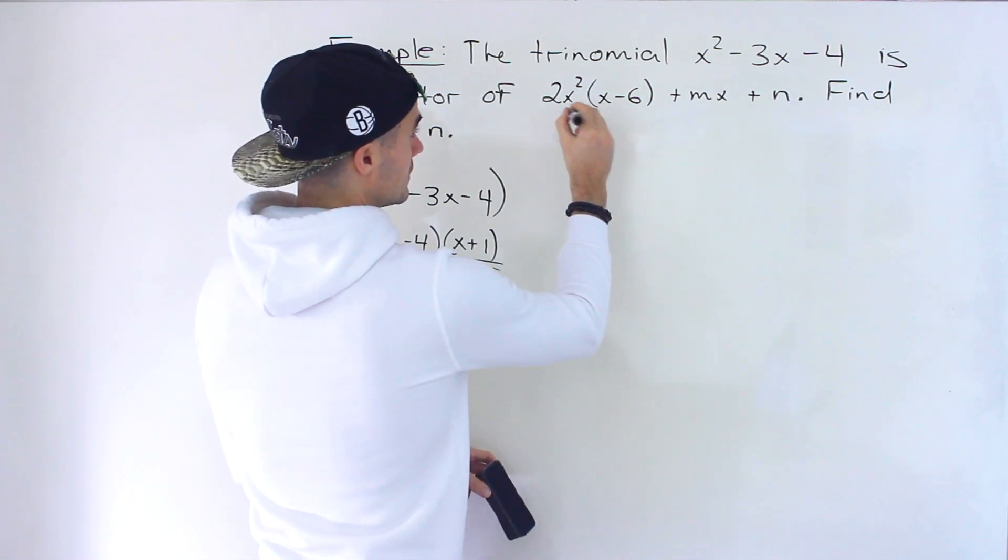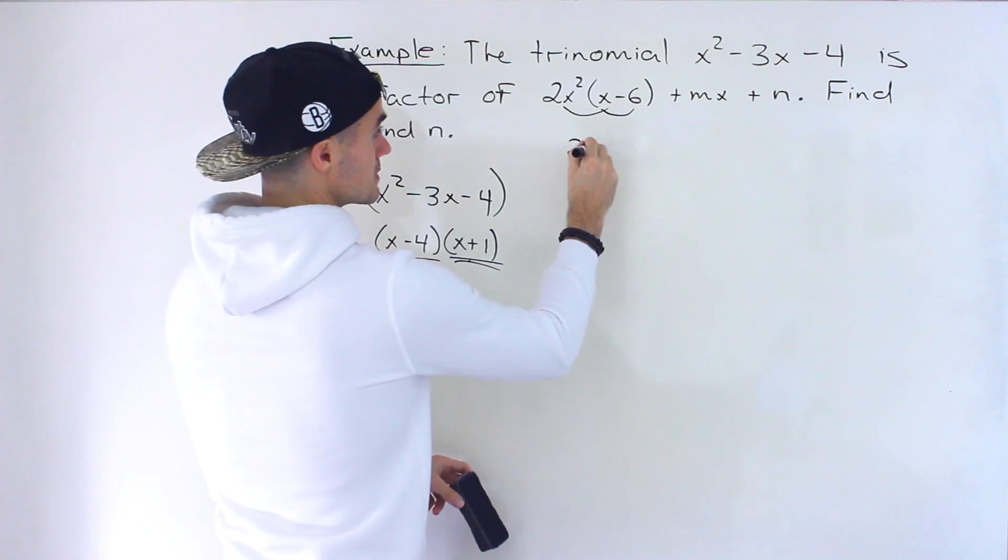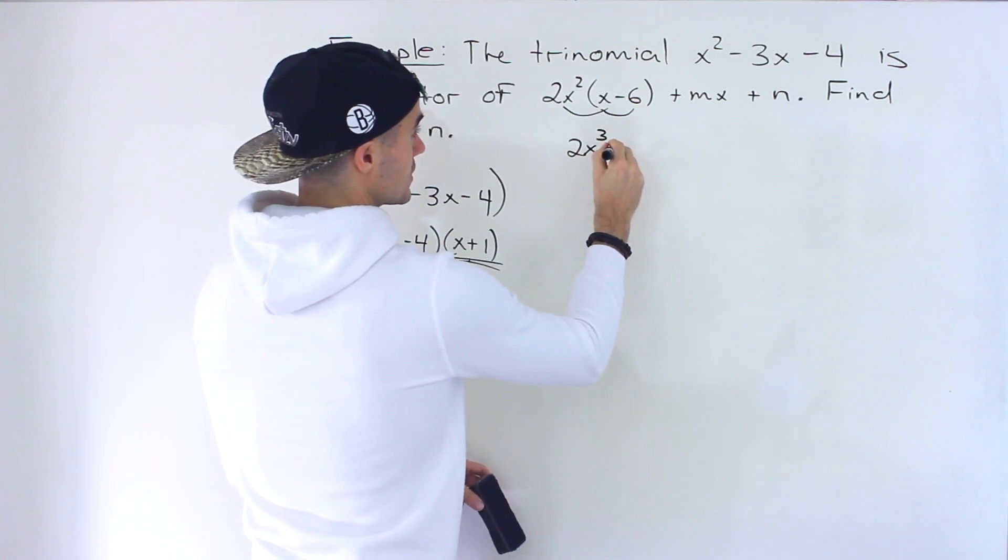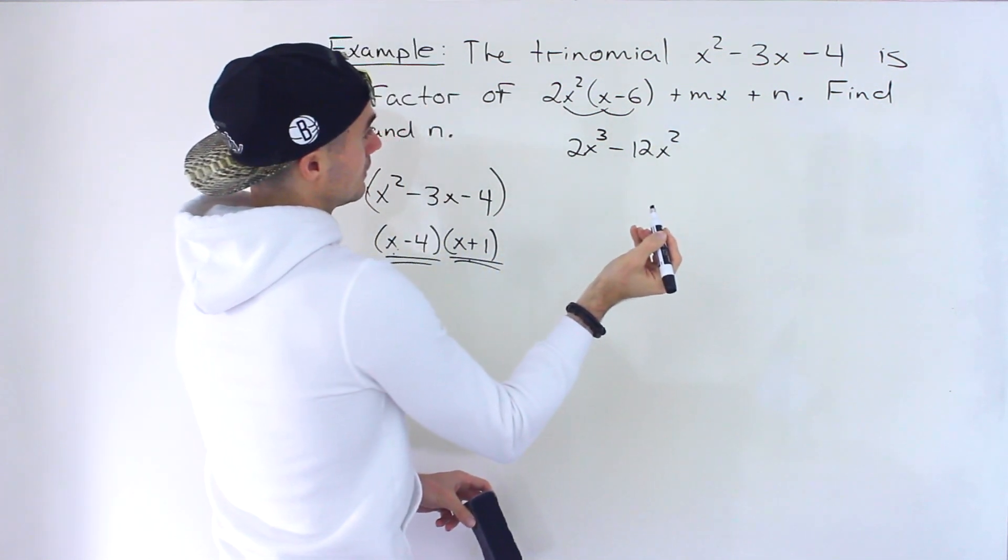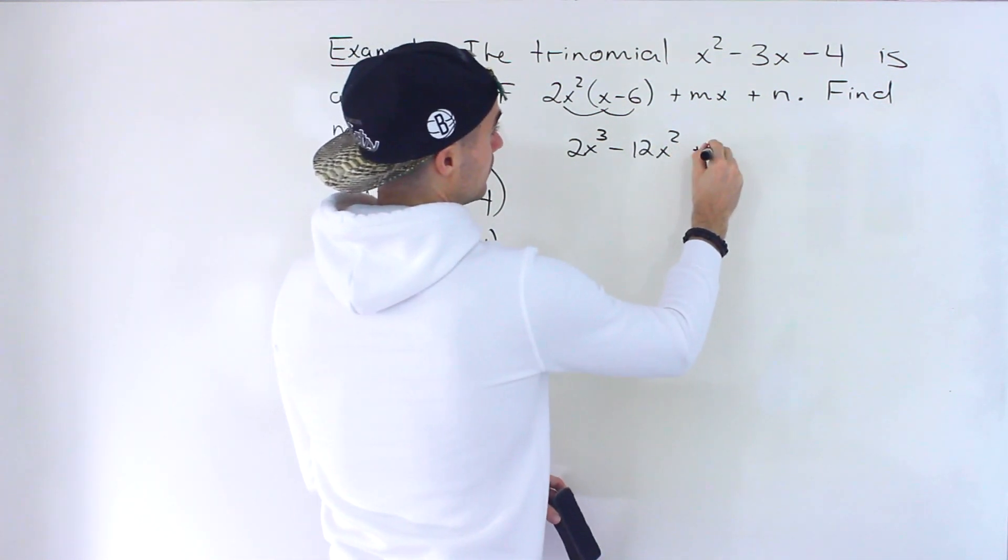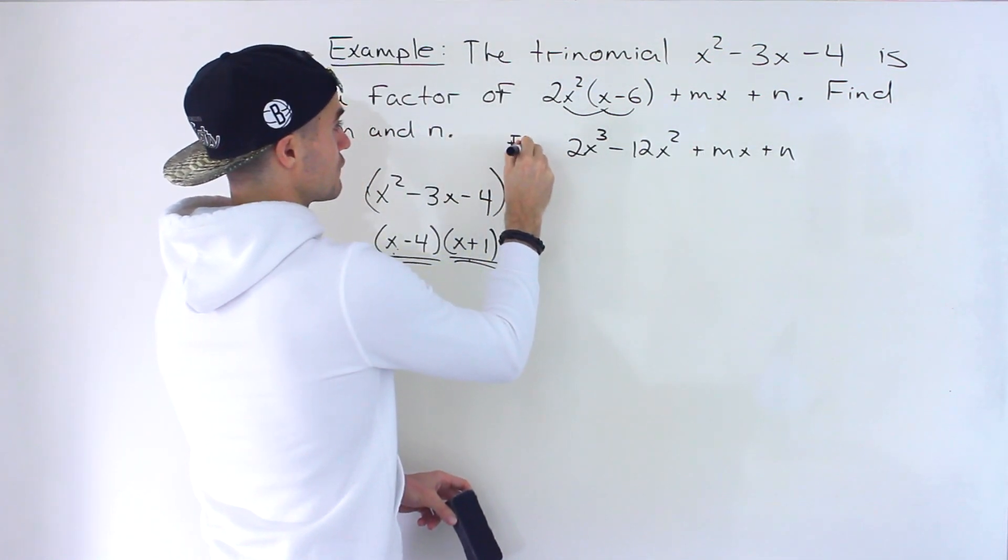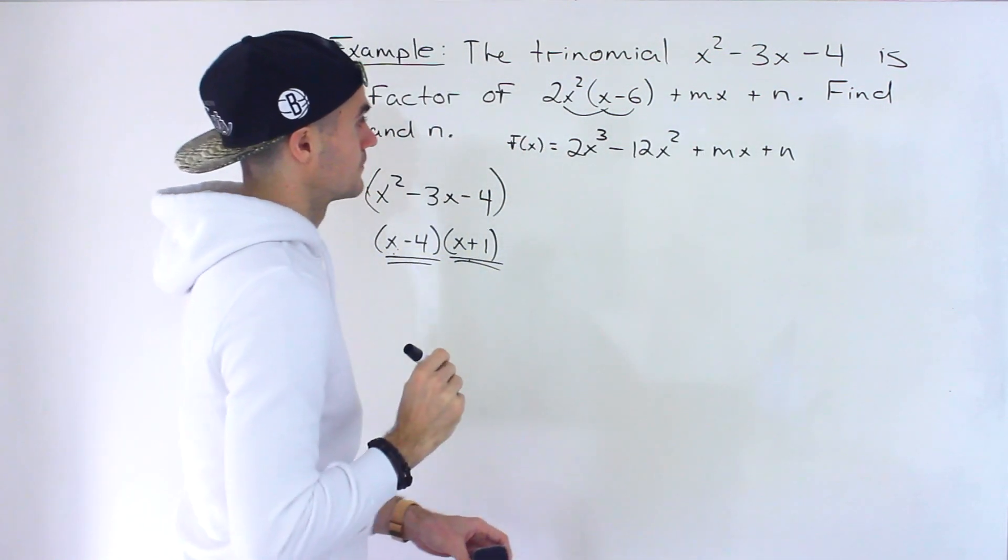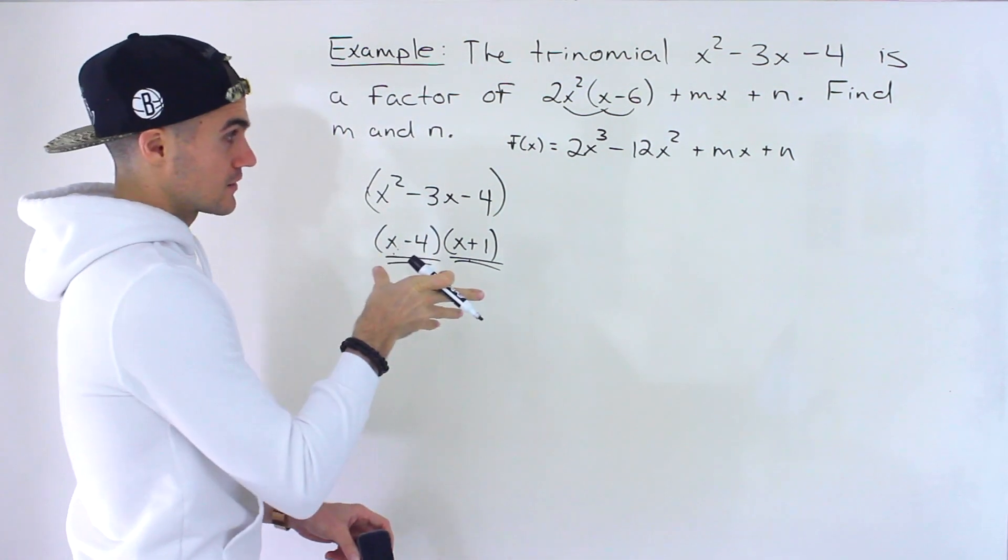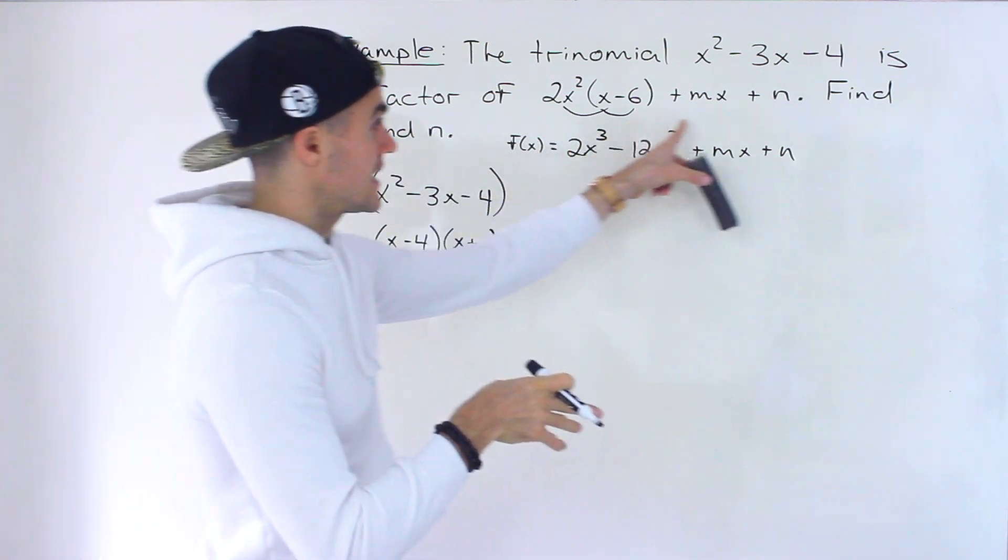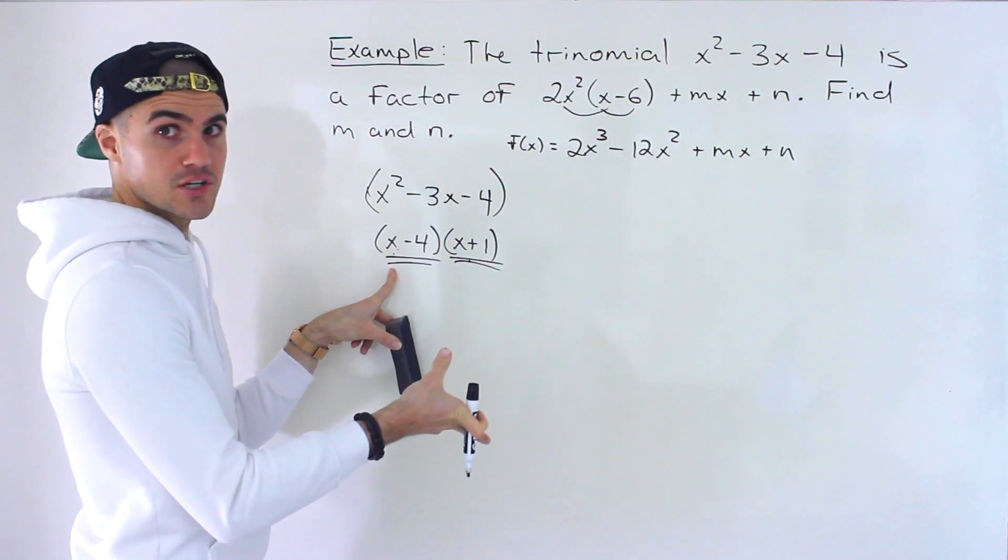Here actually this is given in a unique format. So let's just expand this. So if x minus 4 is a factor of this it means that if we take this and divide it by x minus 4 the remainder is going to be 0.